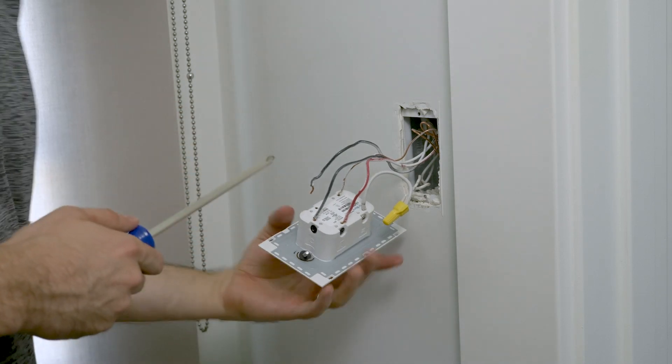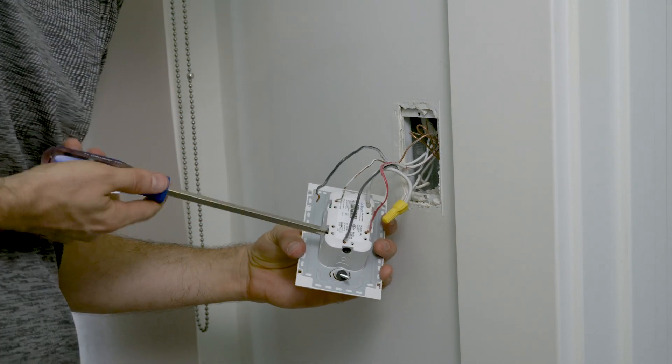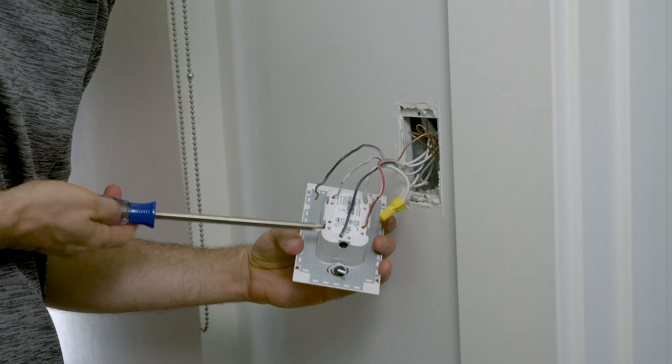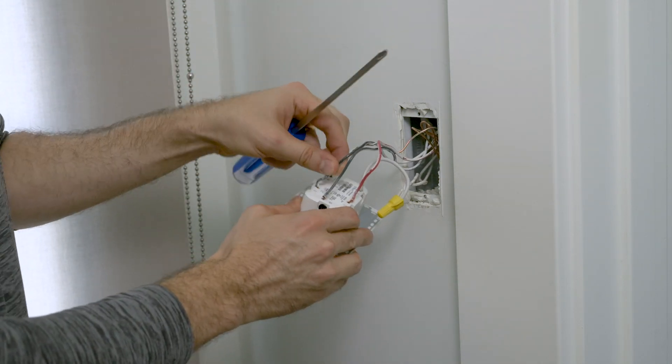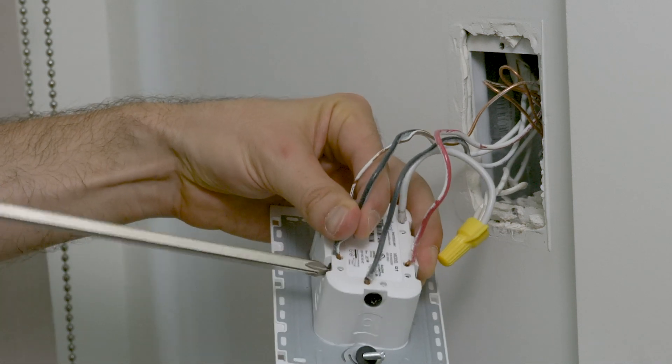It's possible your wires may come out during the installation process. This can happen if the screws are not tightened down properly. Simply loosen the screw and place the exposed wire in the terminal hole. I'll be sure to screw them in tighter this time around.